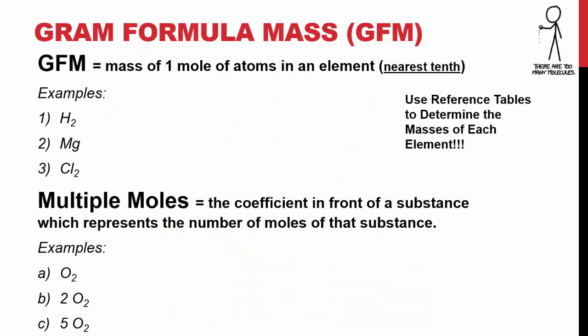Gram formula mass, or GFM, is the mass of 1 mole of atoms in an element rounded to the nearest tenth. We're going to use the reference table to determine the masses of each element. For the example of H2, you're going to have 2 moles of hydrogen, so 2 moles would be 2 atomic mass units, or 2 grams. You just add up the atomic mass of each hydrogen atom, so 1 plus 1 is 2.